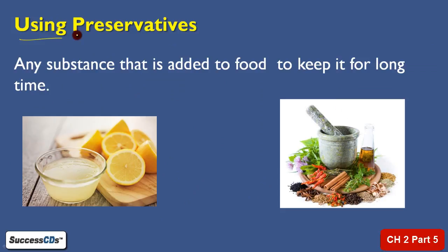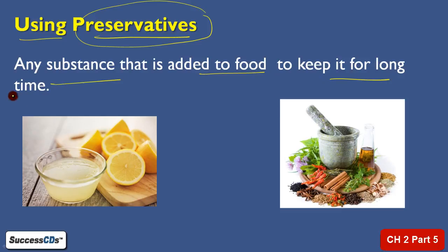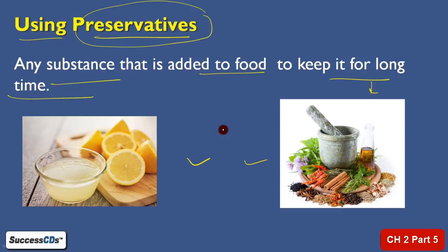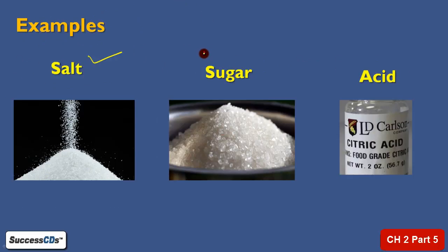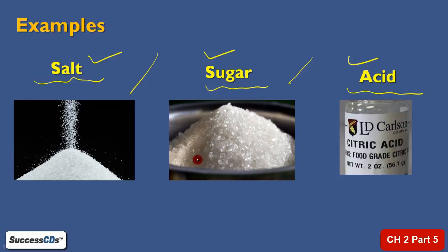Next, we can store food by using preservatives. Preservatives are substances that, when added to food, can actually preserve food for a longer time. Examples include lemon juice and oil, which can act as preservatives. Other examples are salt, sugar, and acids. Any food which has good salt content, good sugar content, or good acid content can actually preserve the food, because in these conditions micro-organism growth cannot happen.